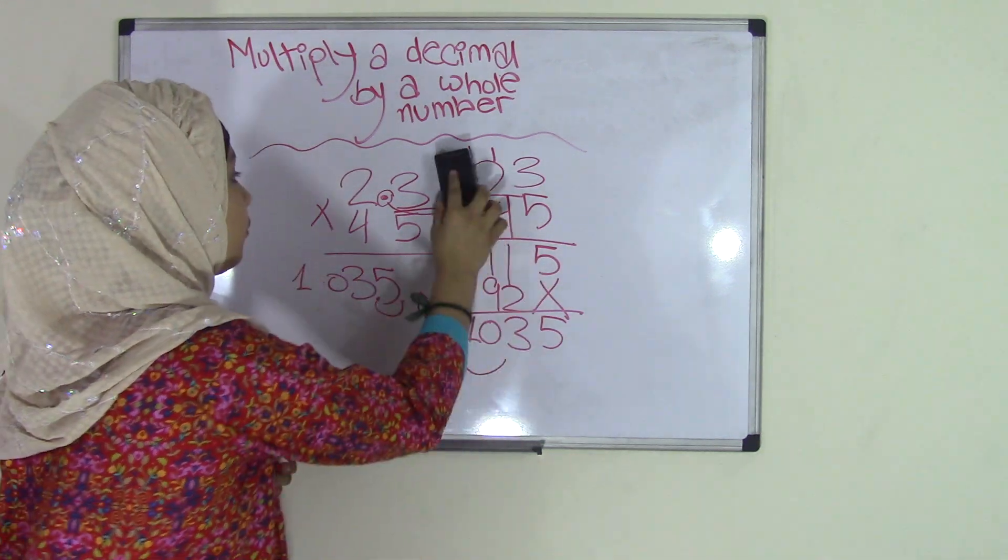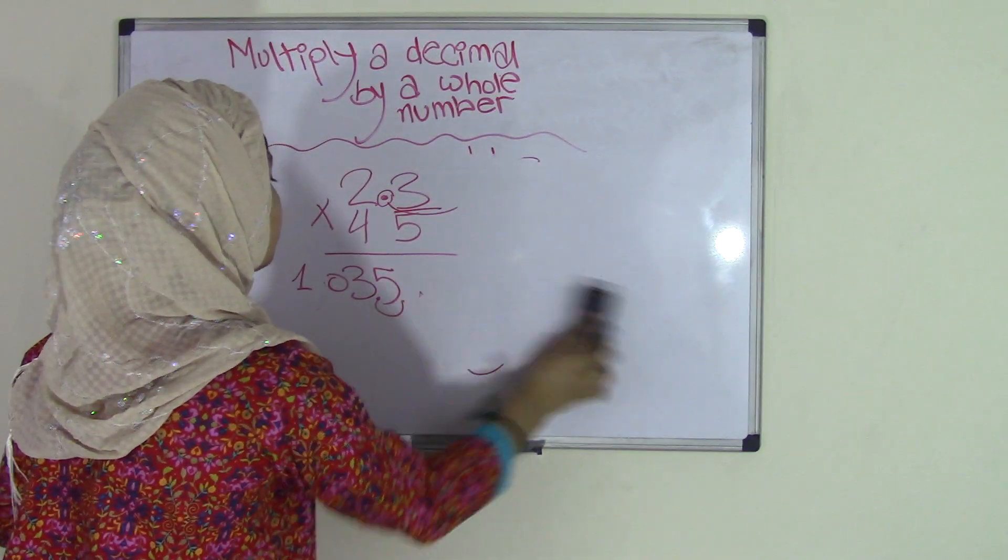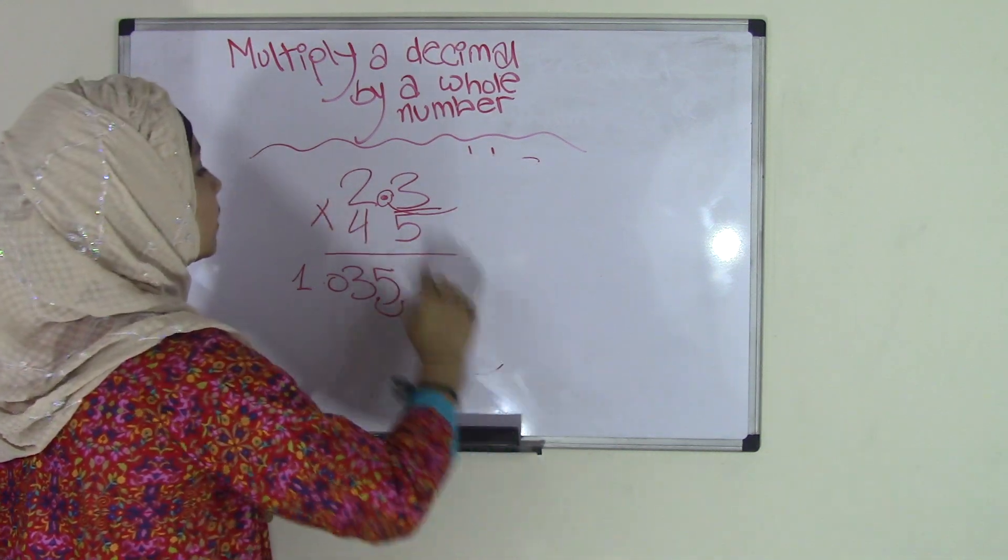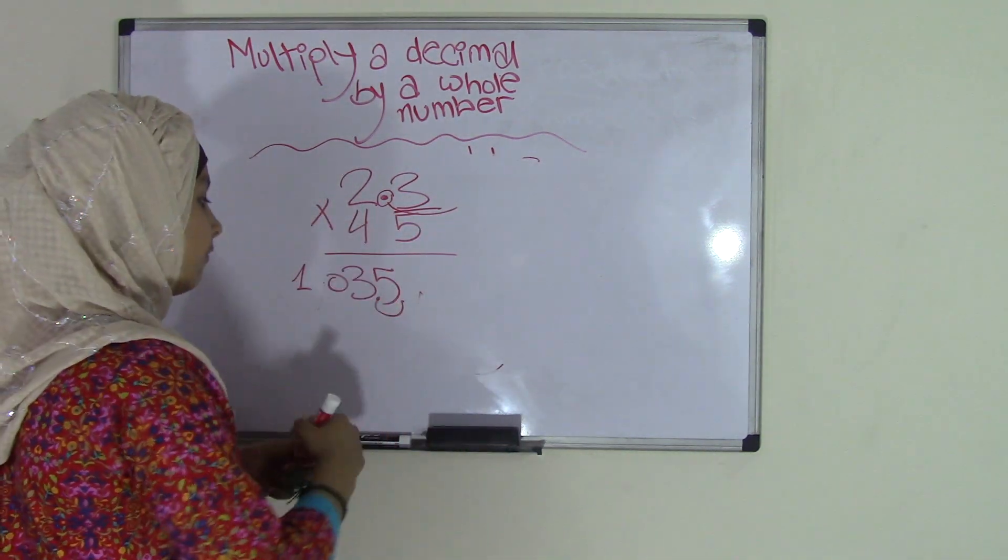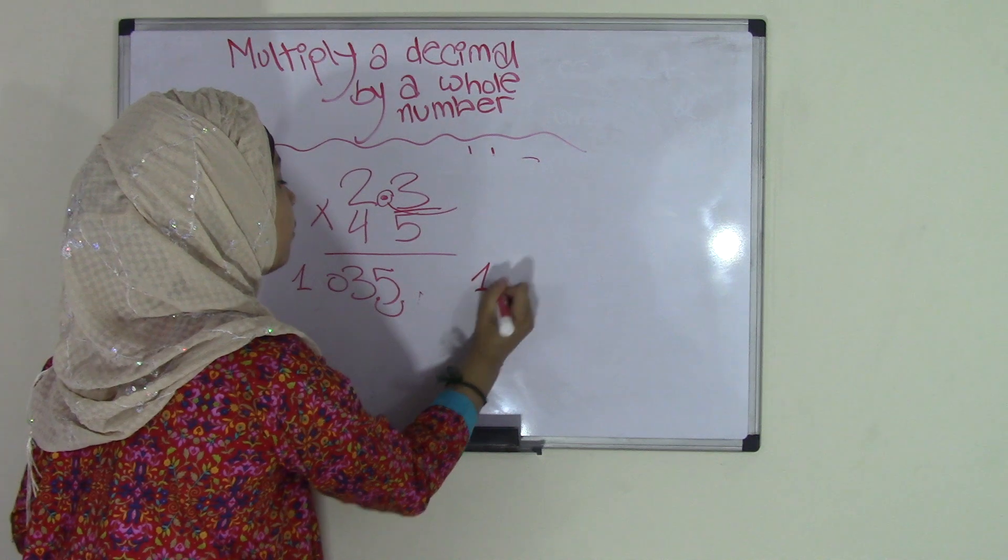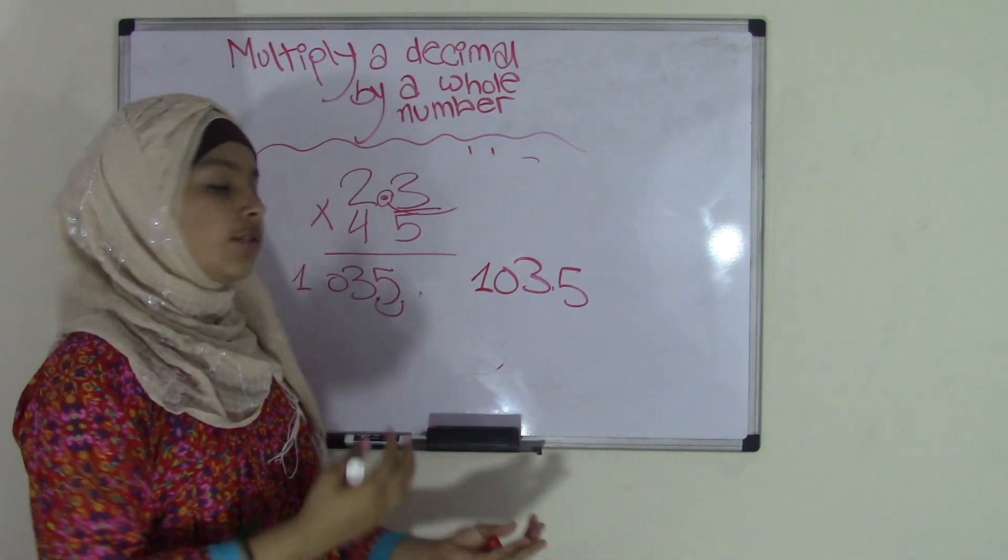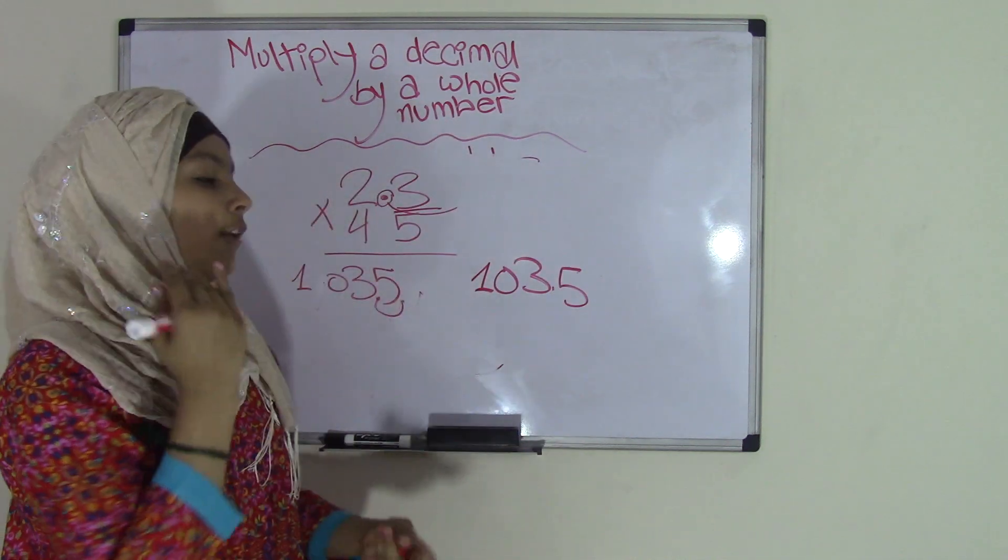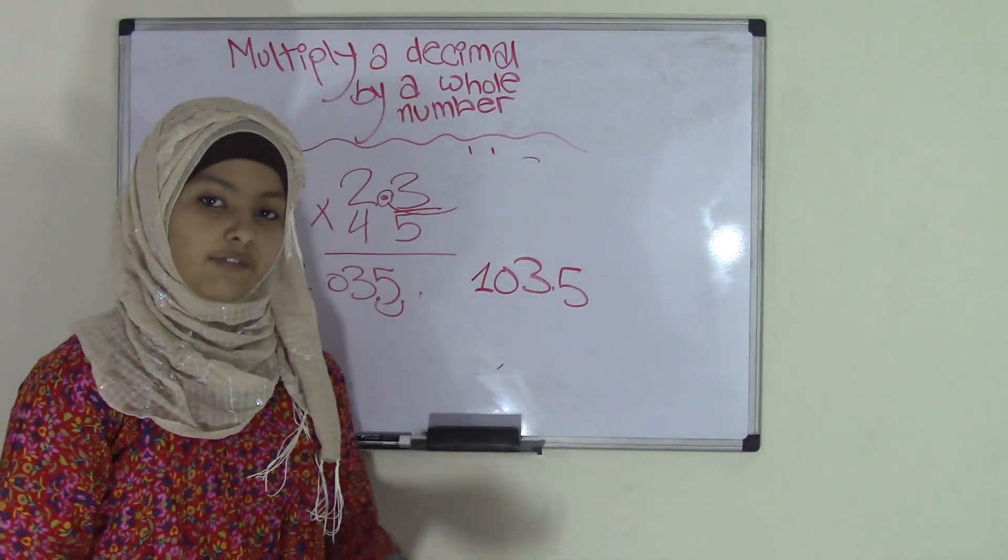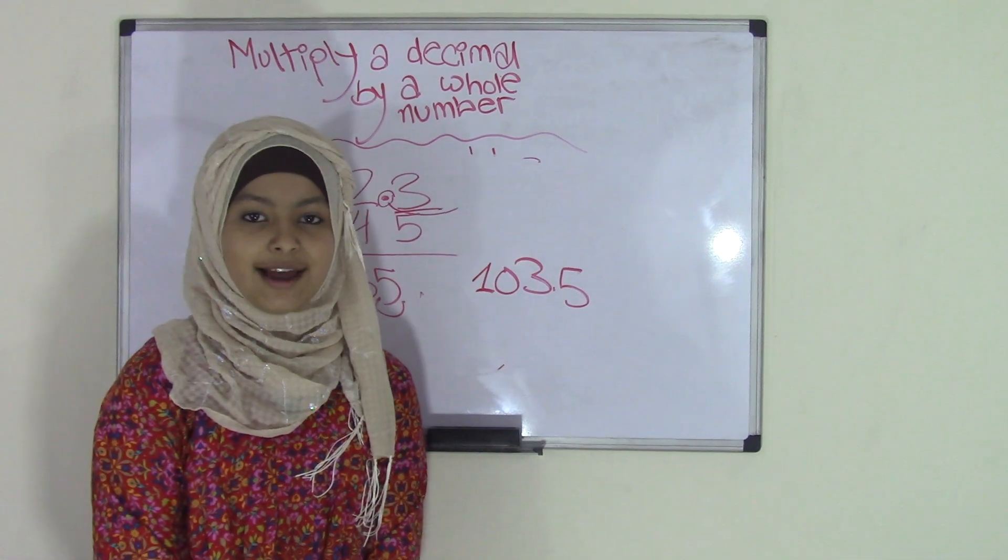That means the product of 2.3 times 45 equals 103.5. Alright, I hope you guys understood this topic and if you want to have additional practice, then you can always visit our website and we'll see you guys next time.